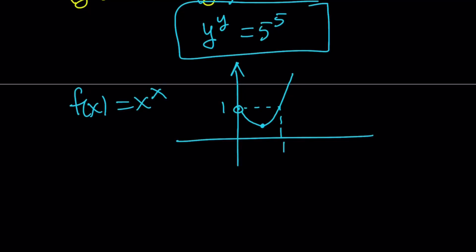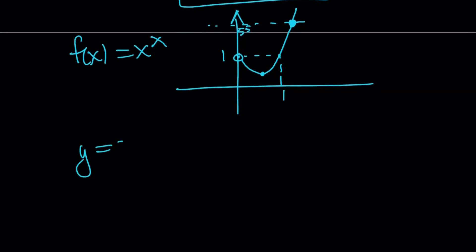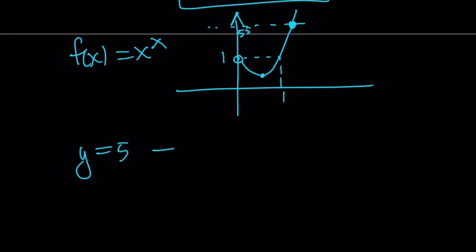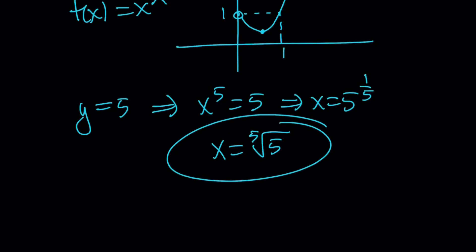If you set the y-value to 5 to the fifth power, which is a very large number — 3,125 — it's going to be greater than 1. Drawing the horizontal line at that point, which is 5 to the fifth power, it's going to intersect the graph at one point, meaning we only have a single solution. So this equation gives us y equals 5. And since y is x to the fifth power, we get x to the fifth power equals 5, which means x equals 5 to the power of 1/5, or the fifth root of 5.